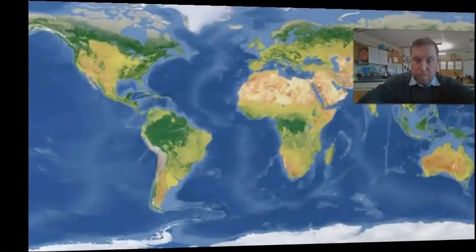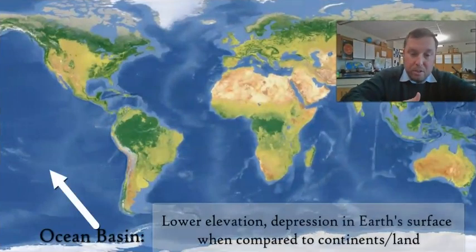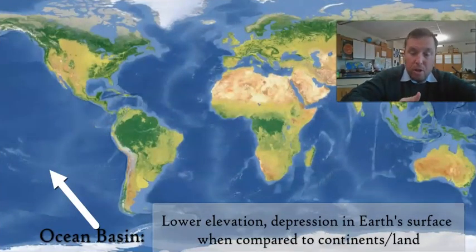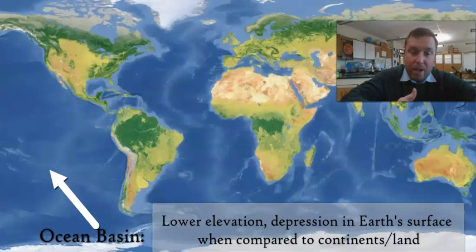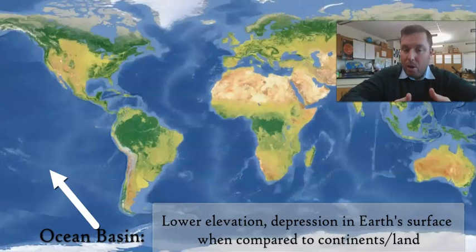Our five major oceans are based on these large ocean basins, which are depressions in the Earth's crust that have formed lower elevation. Water generally accumulates and fills up at these points, creating our oceans.